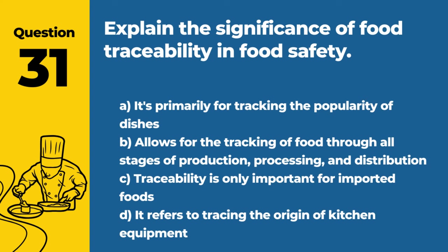Question 31. Explain the significance of food traceability in food safety. Answer: B. Allows for the tracking of food through all stages of production, processing, and distribution. Food traceability is crucial for identifying and addressing sources of contamination in the food supply chain.